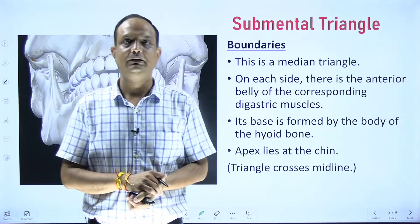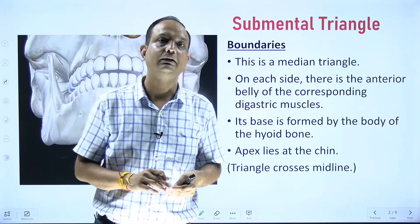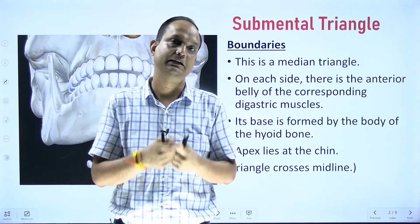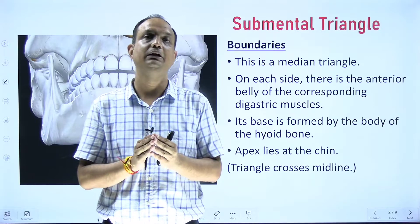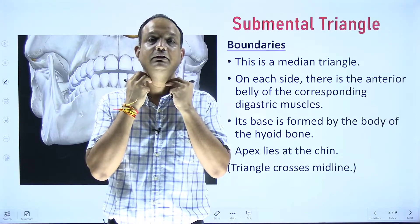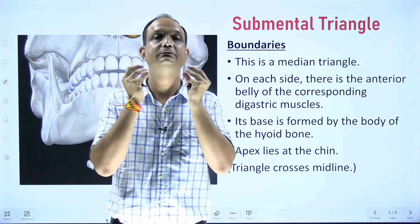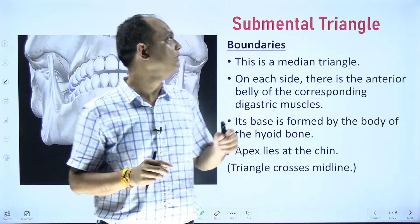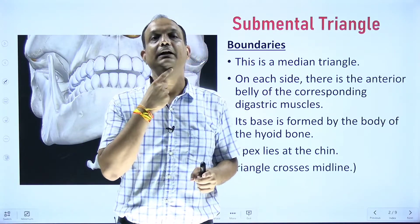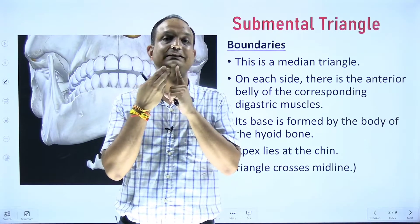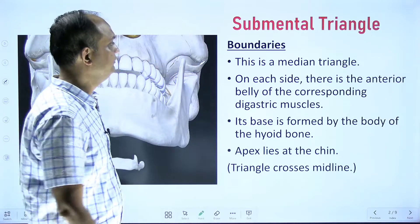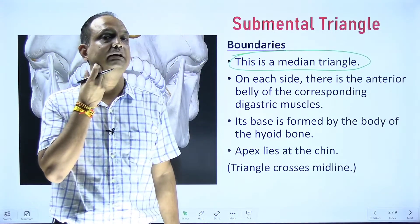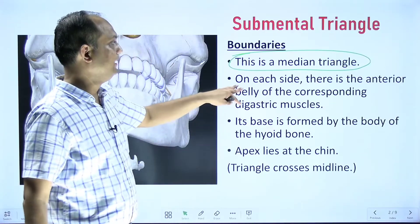The submental triangle has two halves — right and left — and when you join them you have a single submental triangle. Unlike the other subdivisions of the anterior triangle (carotid, muscular, and digastric triangles, each paired right and left), the submental triangle is only a single triangle, median in placement, crossing the midline with half on the right and half on the left.